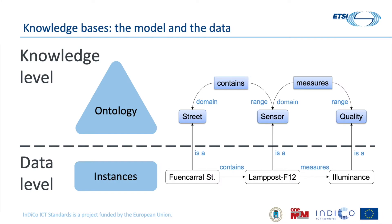When we talk about the knowledge base, we have to differentiate between the knowledge level and the data level. In the knowledge level we have our ontologies — these are abstract data models. They don't refer to any particular thing in the world, but to classes of things. Then we have our data: these are the individuals of interest in different scenarios, which are usually defined according to the ontologies, and it is the ontology that provides the meaning of this data.